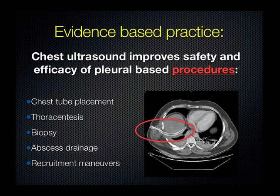Chest ultrasound has definitely been shown to improve the safety and efficacy of pleural-based procedures. You might tap out what you think is dullness and believe a pleural effusion should be there, but you might be wrong and place the chest tube directly into someone's liver. However, when you have the opportunity to use ultrasound to localize fluid in real time, there's really no reason not to use it.